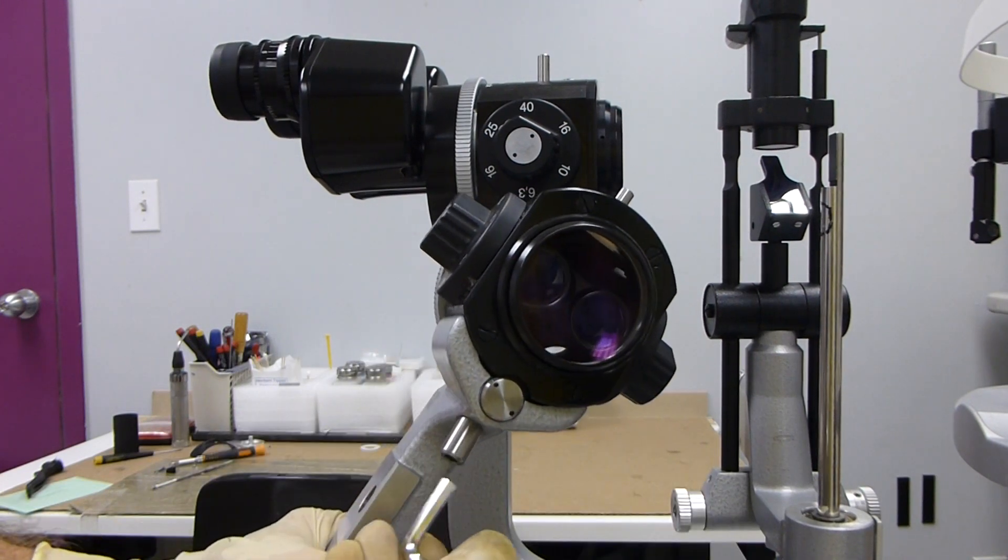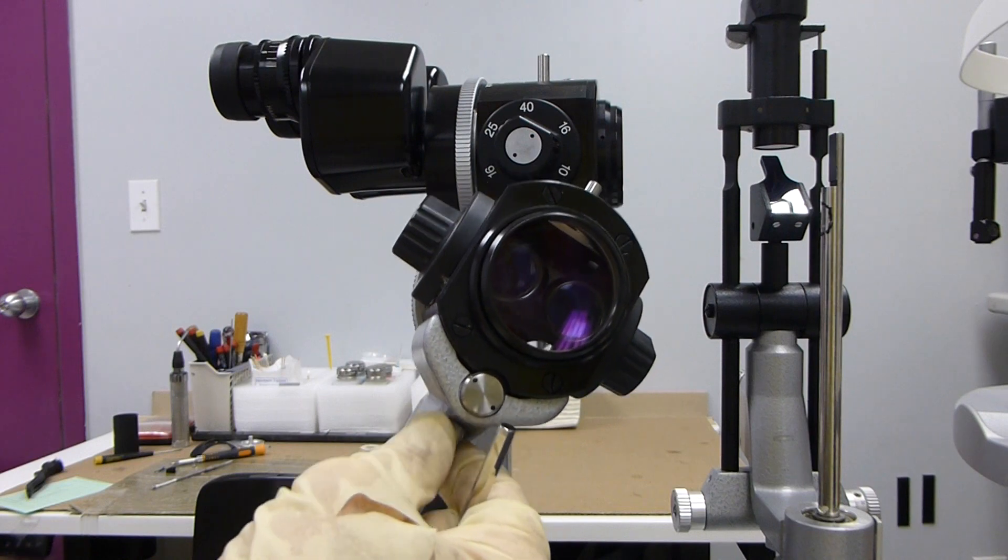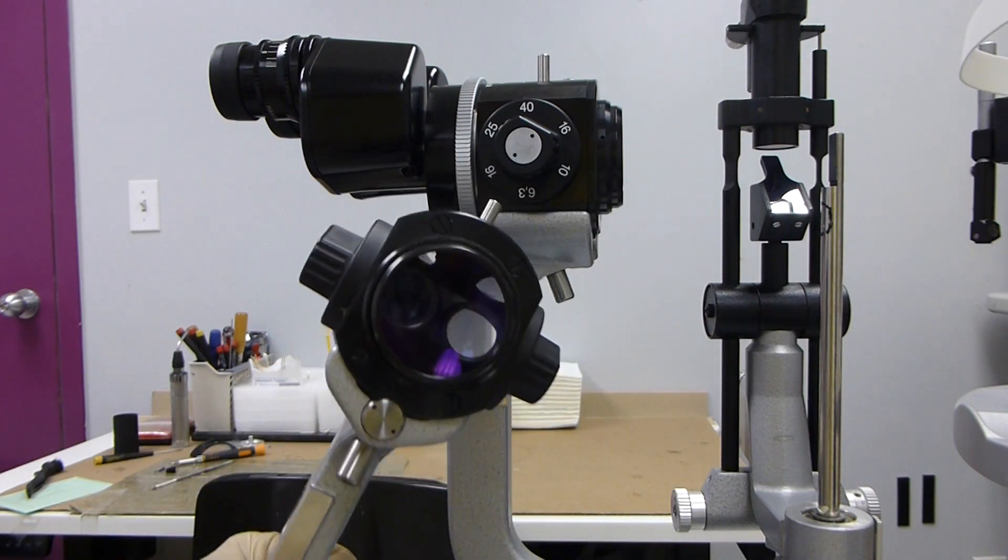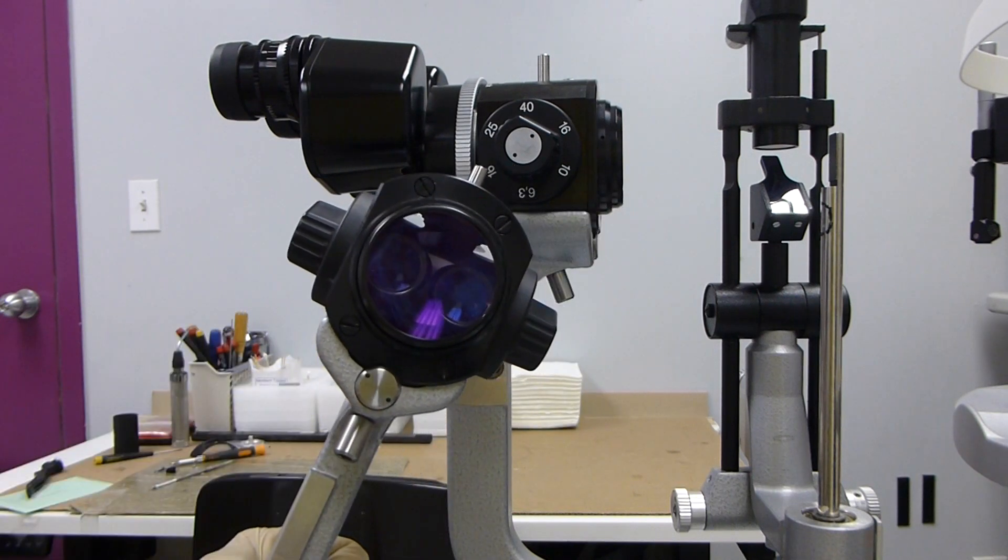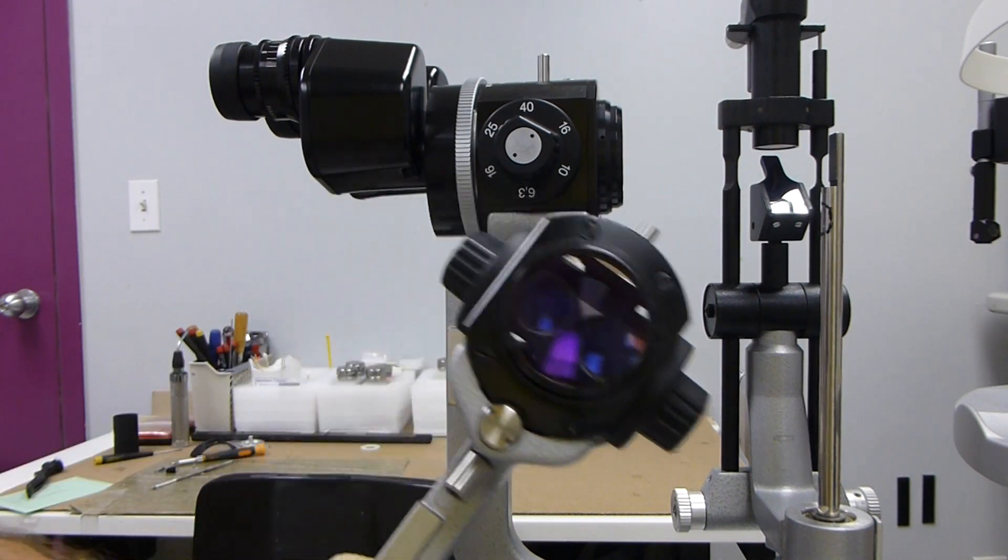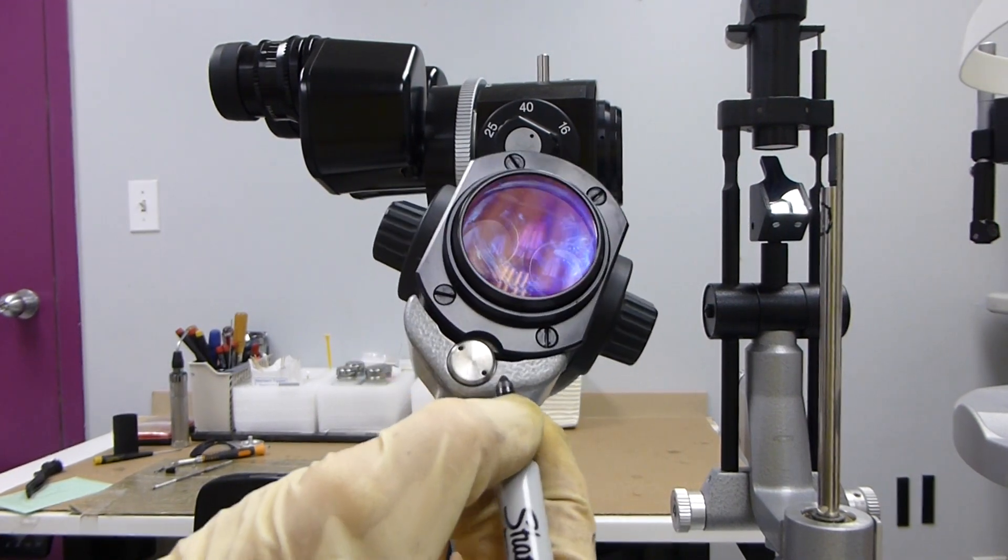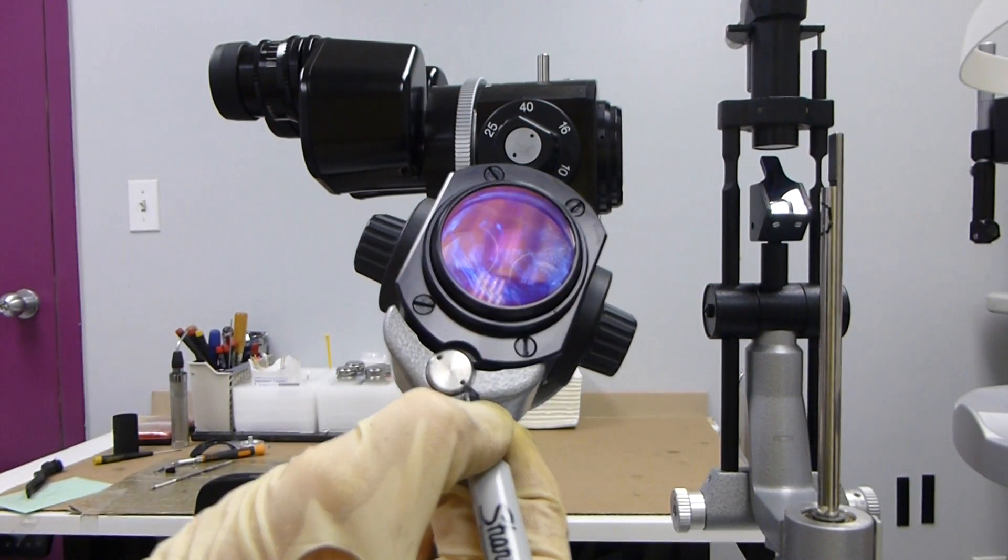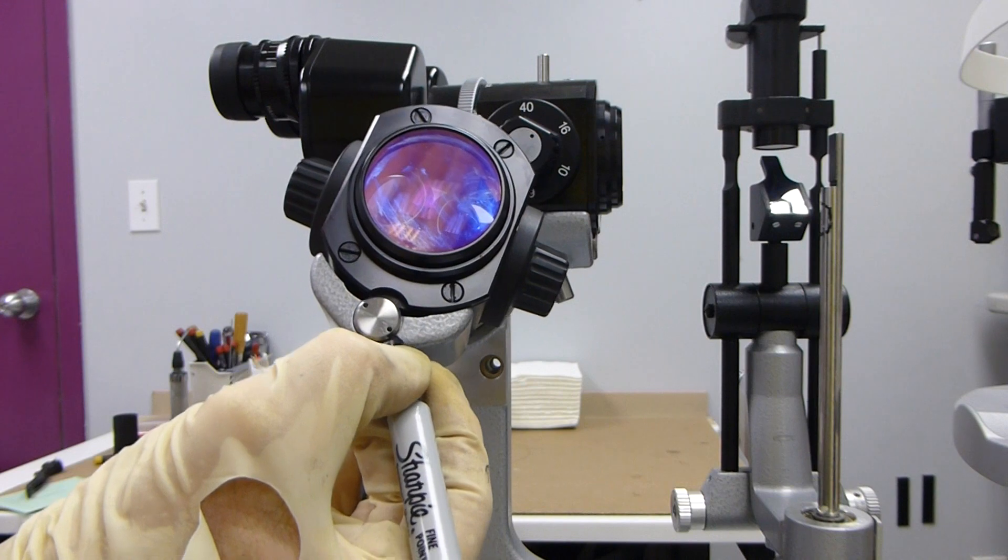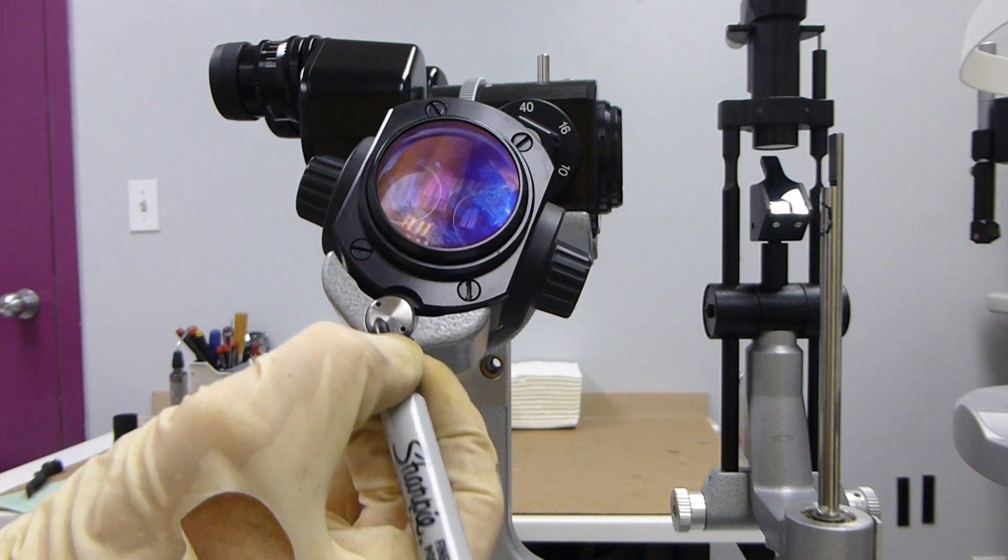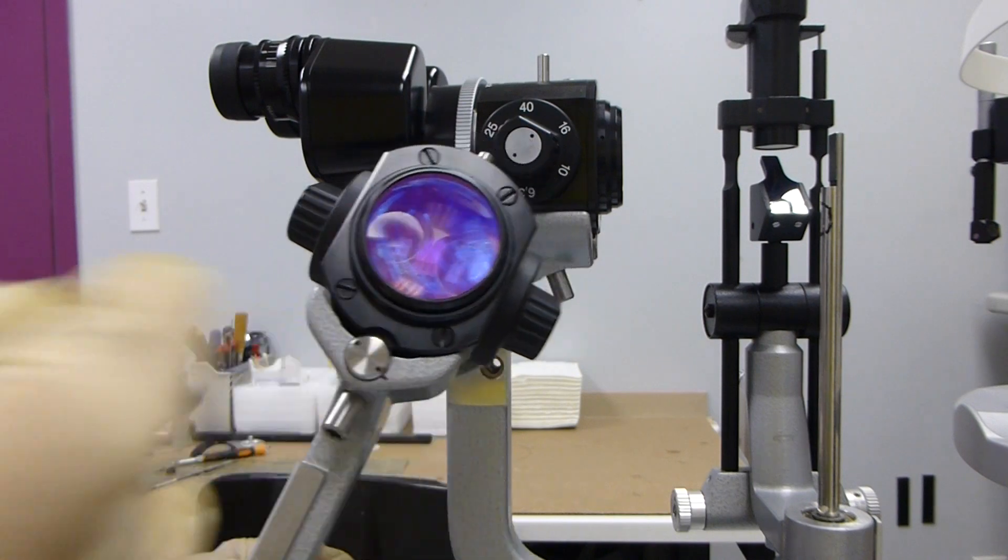Once you have your anchor bolt loose, you can turn your screw one way or the other. Something important for you to do is put a little mark where your origin point is so that you can tell how much you've turned and which way you need to turn it.